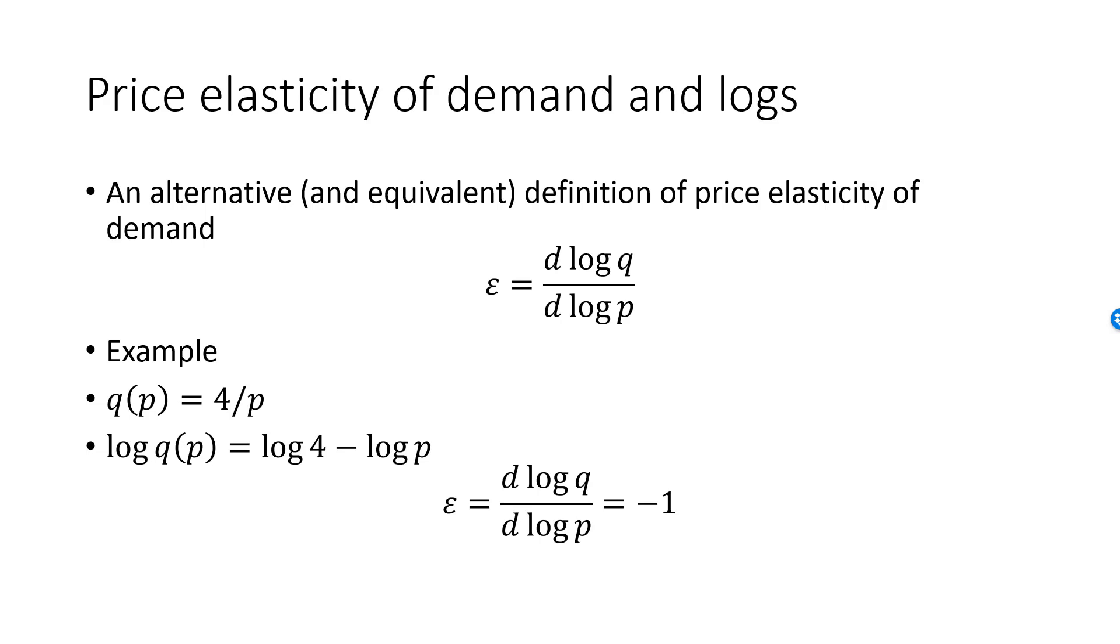The derivative of log q with respect to log p can trivially be found to be equal to minus 1. This formula is useful for power functions but useless for linear functions. For linear functions, use dq/dp times p over q.